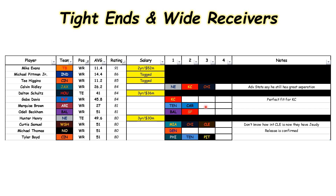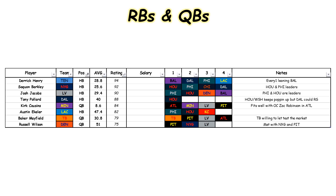Next would be Marquise Brown, who has interest from Tennessee and Carolina. Odell Beckham has interest from Baltimore and San Francisco — Baltimore keeps coming up consistently. Hunter Henry is already signed, so there are no real tight ends left on the list. Curtis Samuel comes up next in wide receivers; Cleveland's interest is unclear now that they traded for Jerry Jeudy, but Miami and Chicago look like frontrunners. Michael Thomas looks like he could be heading to Denver after his release was just confirmed. And Tyler Boyd has several interested teams, with three consistently popping up the most.